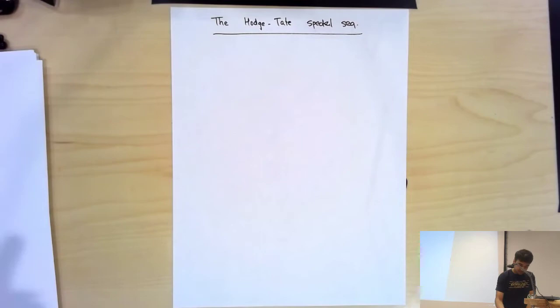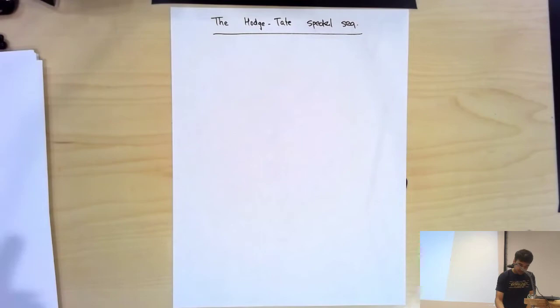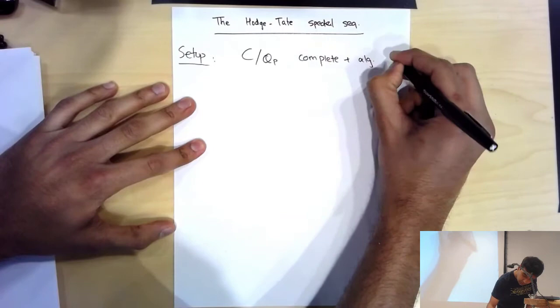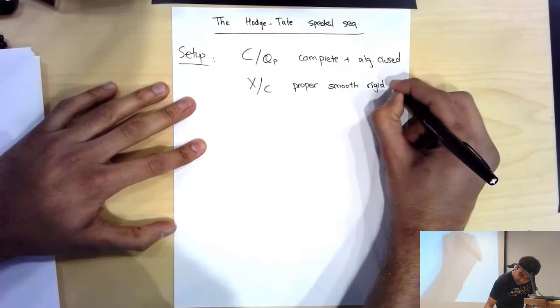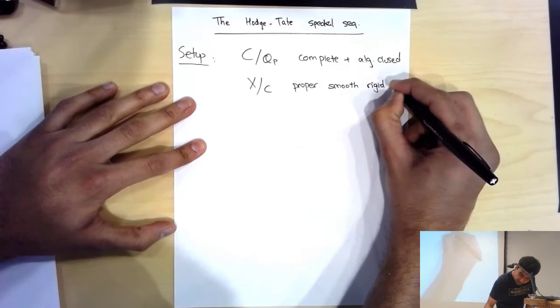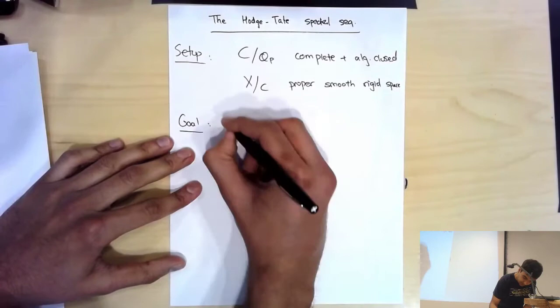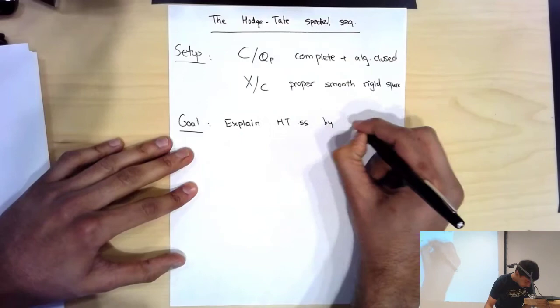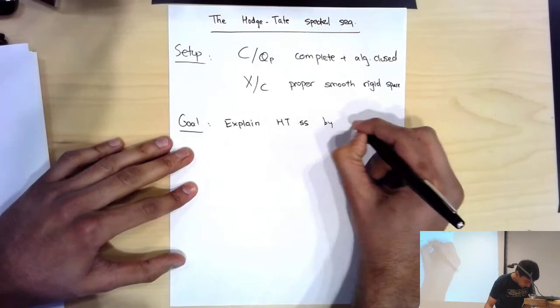The setup is as follows. C over Q_p is a complete and algebraically closed field. X over C is a proper smooth rigid space, which I will always think of as an adic space. Properness is relevant for one part and smoothness is relevant for the other part. The goal of today is to explain how to construct the Hodge-Tate spectral sequence — HTSS — by descent from perfectoid spaces, as I indicated yesterday.